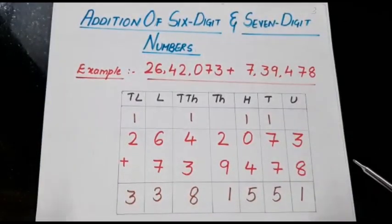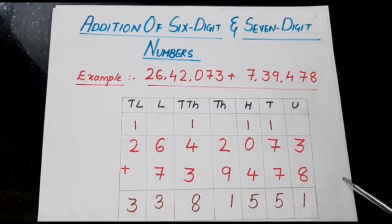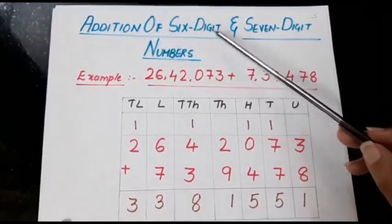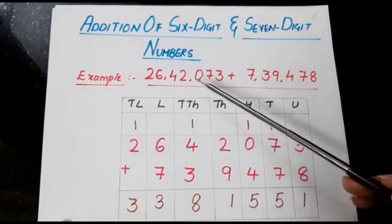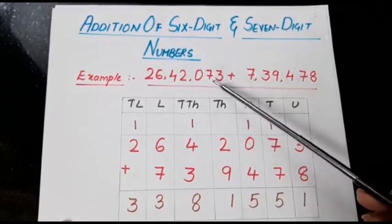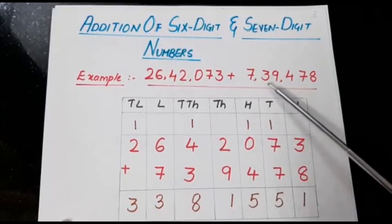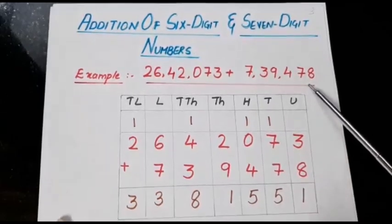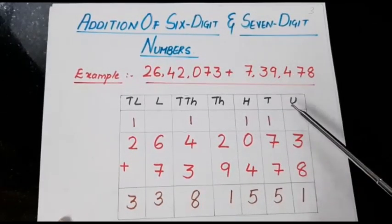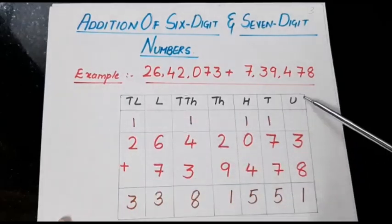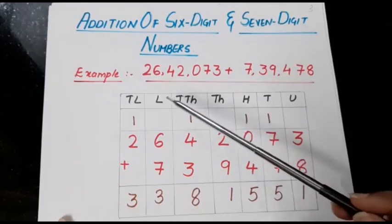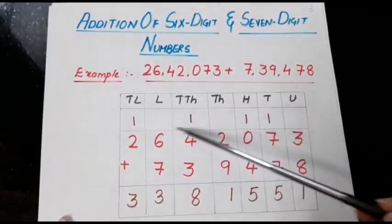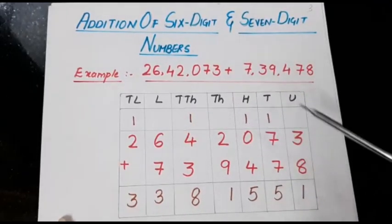In 5th standard you have addition and subtraction of 6 and 7 digit numbers. So first we will learn addition of 6 and 7 digit numbers. Since it is a big number, we are making a table here with columns for unit, tens, hundreds, thousands, ten thousands, lakhs, and ten lakhs. We have left one space for numbers that we carry.